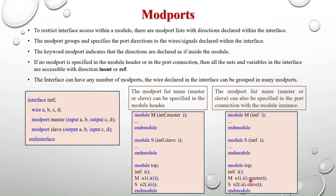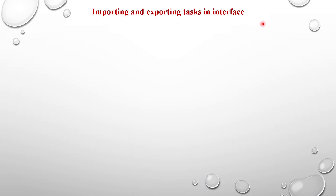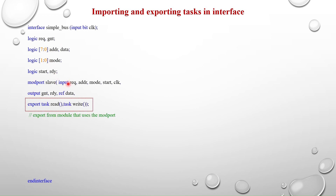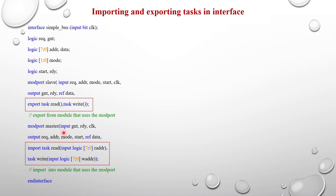Now we will see how to import and export tasks in an interface using modports. Here I have a simple bus interface — I'm passing the clock and declaring all the signals. I'm defining the modport slave with directions for the signals, and for tasks read and write I'm using the keyword export: 'export task read' and 'export task write'. Export means the module which uses the simple bus interface with slave modport can export these read and write tasks to other modules. For the master modport I'm using the keyword import for tasks read and write.